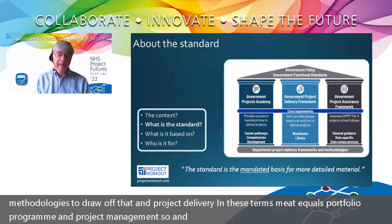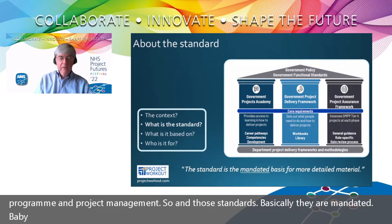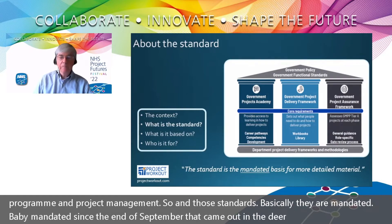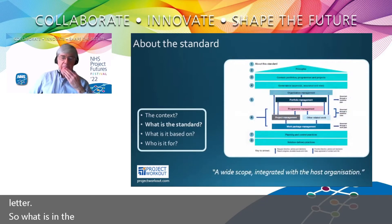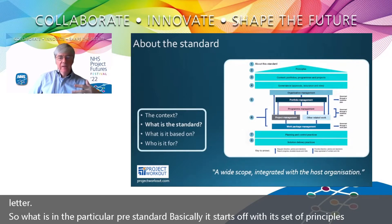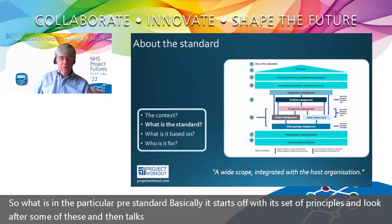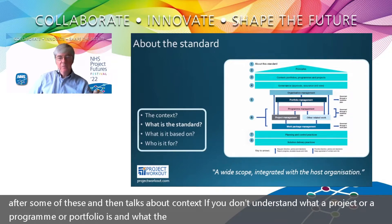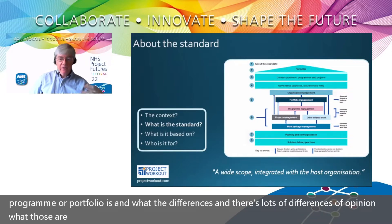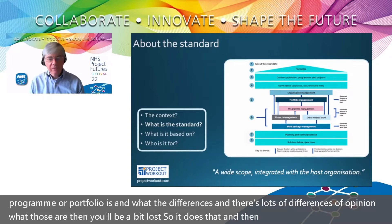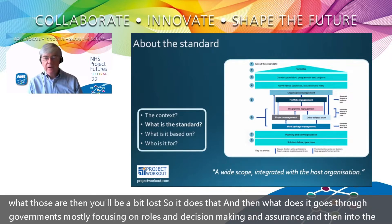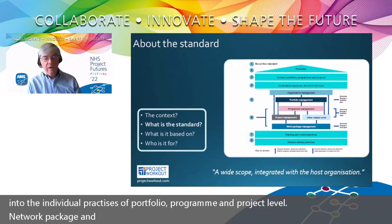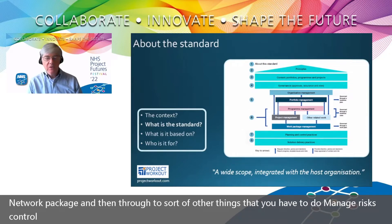These standards have been mandated since the end of September, communicated through a Dear Accounting Officers letter. The project delivery standard starts with a set of principles, then covers context — explaining what a project, programme, or portfolio is and what the differences are. It then goes through governance, focusing on roles, decision-making, and assurance, and then the individual practices at portfolio, programme, project, and work package level. Finally, it covers supporting practices like risk management, change control, communication, and stakeholder engagement.